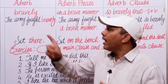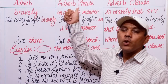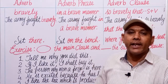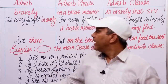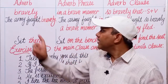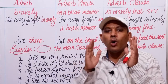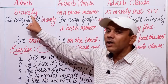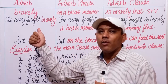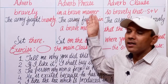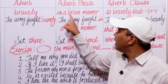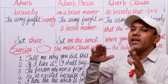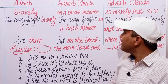Now how to extend an adverb into an adverb phrase and an adverb phrase into an adverb clause. For example: 'bravely.' As you know, most words ending in -ly are adverbs. This is a single word acting as an adverb. Change it into an adverb phrase: 'in a brave manner' — here 'bravely' has been changed into the adjective 'brave' and 'brave manner' becomes an adverb phrase.